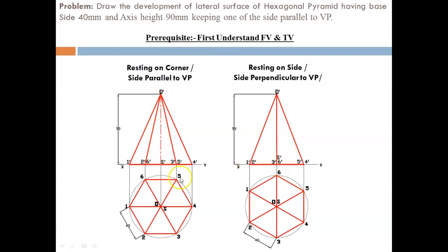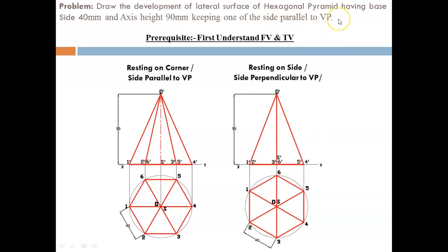Here there are two configurations. This configuration is resting on a corner, and this configuration is resting on a side — also called keeping one side parallel to the VP. In the other case, the side is perpendicular to the VP. When you say parallel to the VP, it means parallel to the XY line; when you say perpendicular to the VP, it means perpendicular to the XY line. So there are two conditions: resting on corner and resting on side. In our question, they mention side parallel to the VP, which is parallel to the XY line, so we will proceed with the first case.